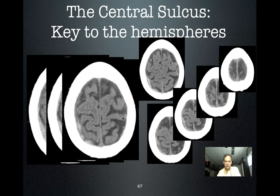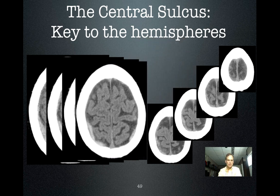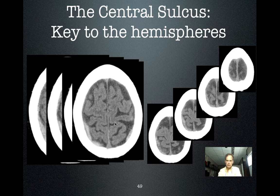That makes this motor cortex and this sensory cortex. Here's the cingulate sulcus — forward and over — that makes this central sulcus, meaning this is motor cortex. Knowing that, you can predict to some extent what part of the body would be affected by a stroke or tumor in that area. Cingulate sulcus, central sulcus — that makes this motor cortex, which is the precentral gyrus, and postcentral gyrus is sensory cortex.